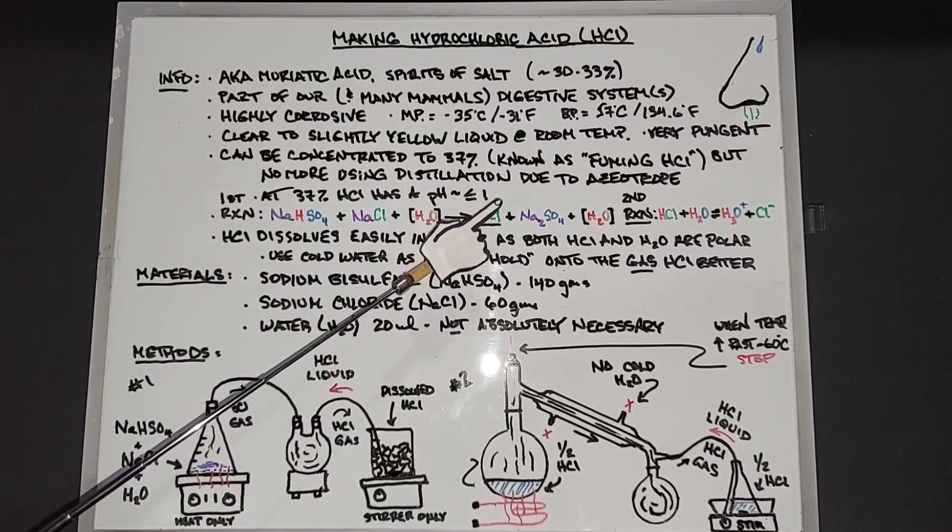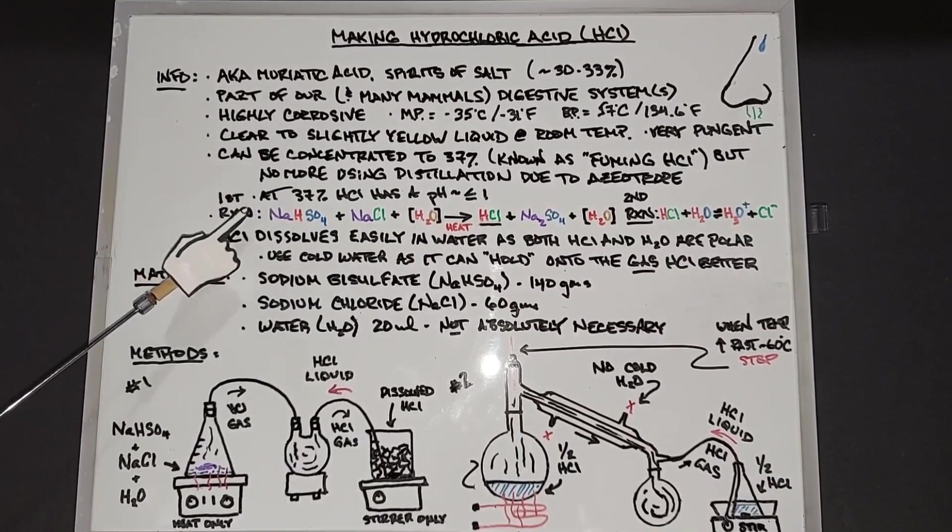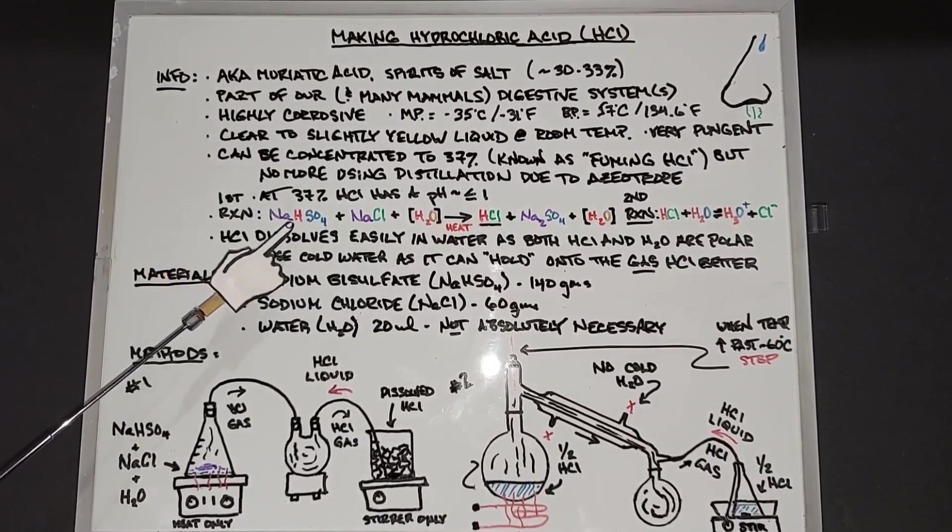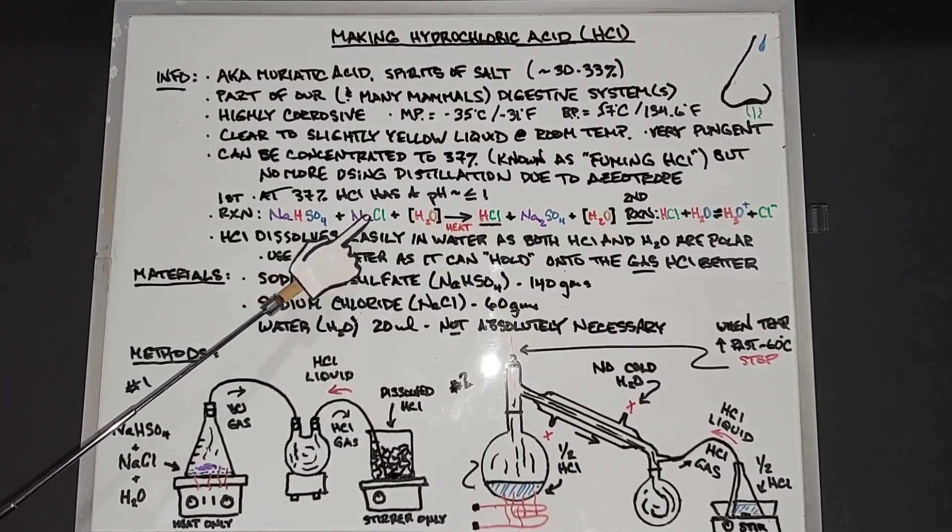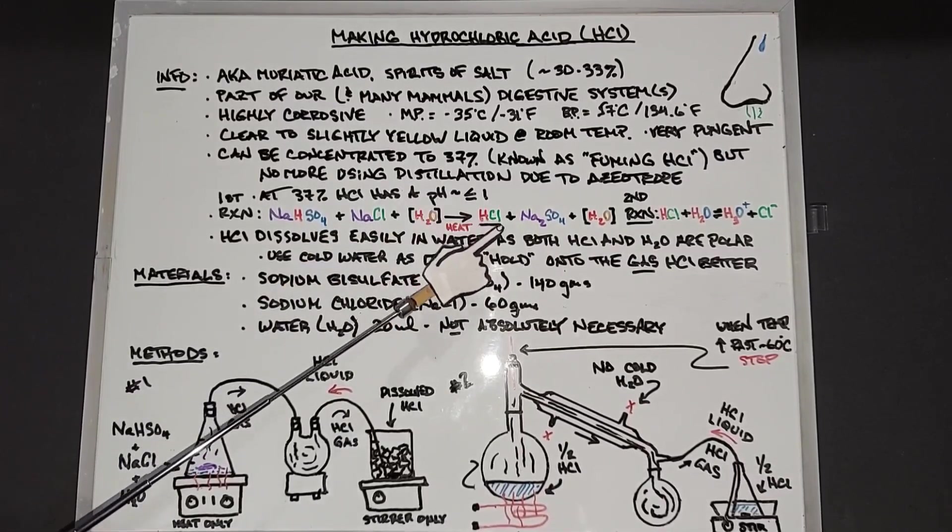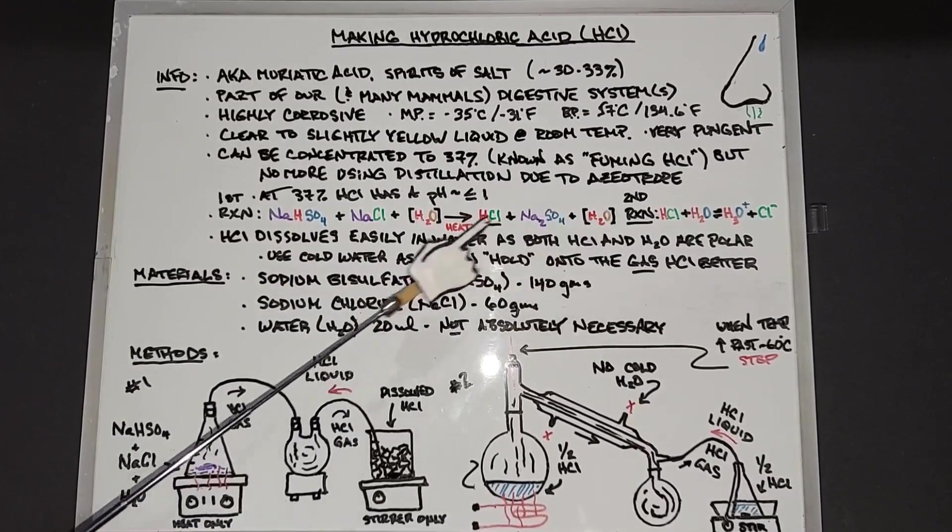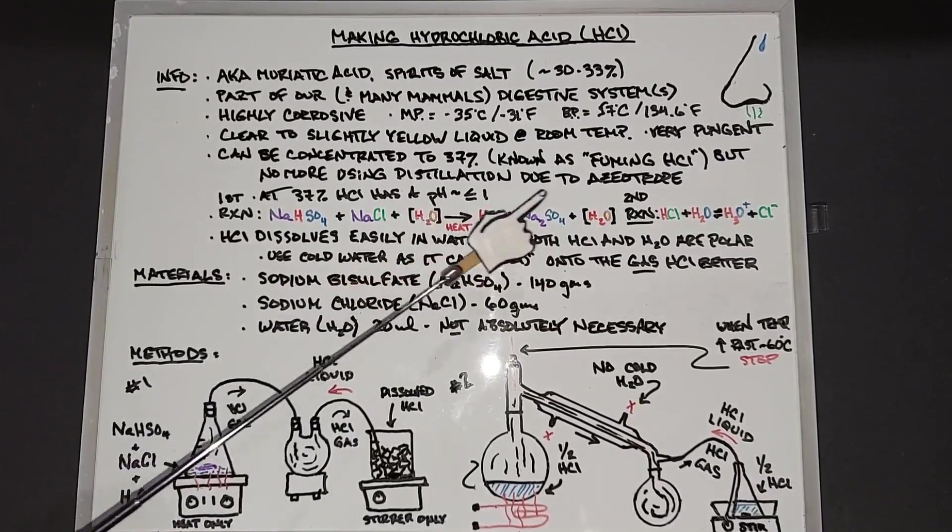First reaction here, which is making the hydrochloric acid, we take our sodium bisulfate, add some salt NaCl and a little bit of water with some heat. This will yield some hydrochloric acid gas plus sodium sulfate plus water. Waters are in the brackets because they're not really part of this reaction, although there will be a little bit used in the beginning.